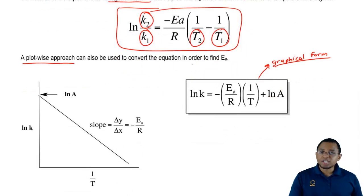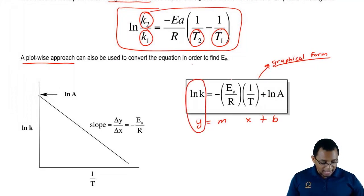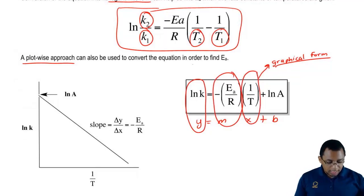The Arrhenius equation can be converted so it forms this plot-wise approach. This equation is equal to y equals mx plus b. Y is lnk, m is negative Ea over R, 1 over T is x, and lnA is b.